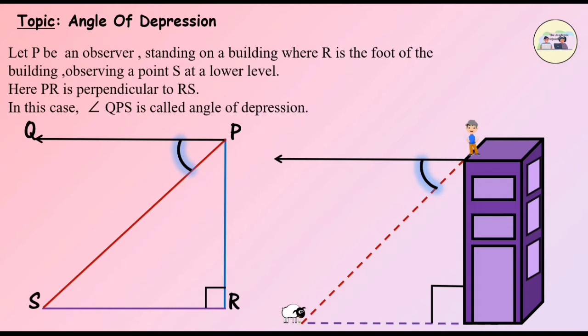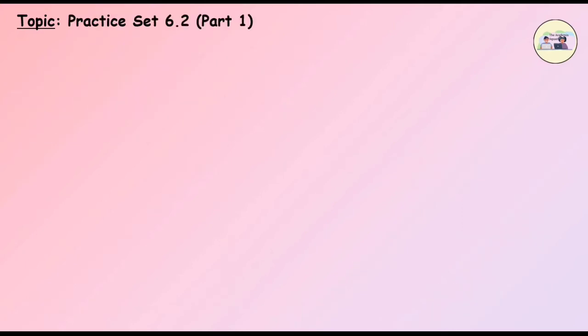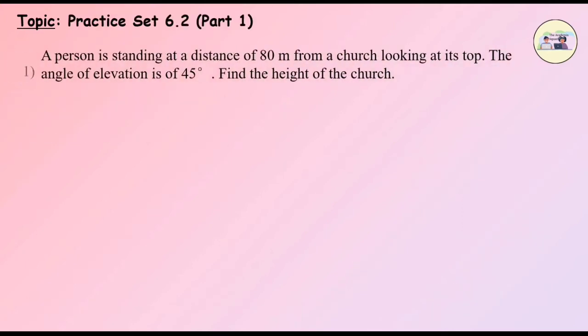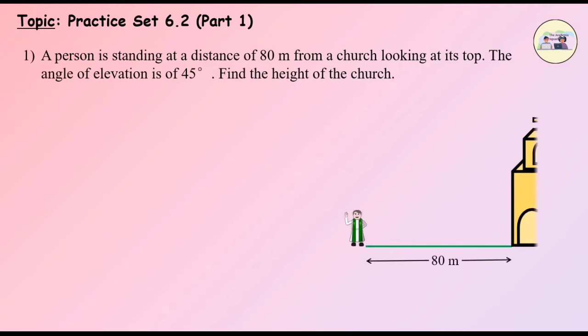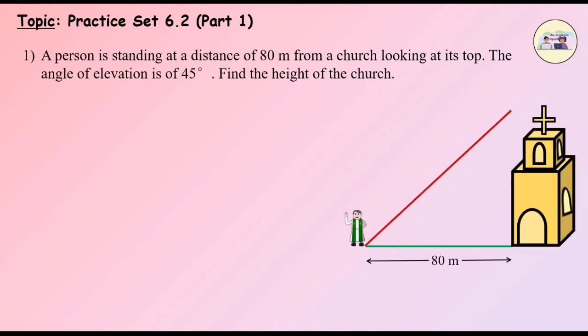Let's solve a few questions from Practice Set 6.2. Question 1: A person is standing at a distance of 80 meters from a church looking at its top. The angle of elevation is 45 degrees. Find the height of the church.